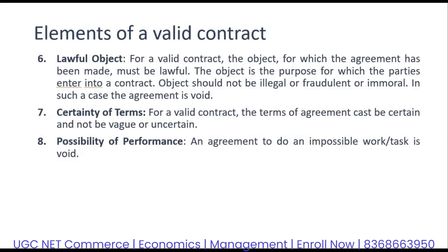The sixth element is lawful object. Lawful object is very important — it means the purpose behind the entire contract. For a valid contract, the object for which the agreement has been made must be lawful. You can't have a purpose which is illegal, fraudulent, or immoral. If anything of that sort prevails in a contract, then that agreement is completely null and void.